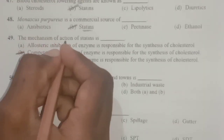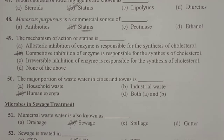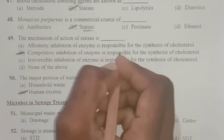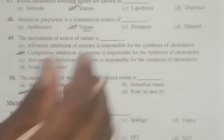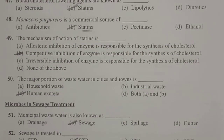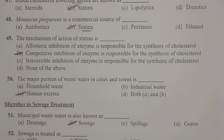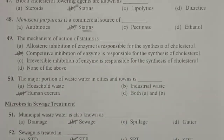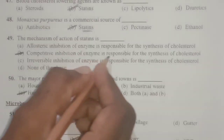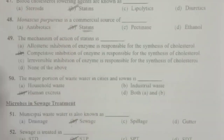Next: what is the mechanism of action of statins? The mechanism is competitive inhibition of the enzyme responsible for synthesis of cholesterol. Statins function as blood cholesterol-lowering agents by undergoing competitive inhibition of the enzymes responsible for cholesterol synthesis. By inhibiting these enzymes, they decrease blood cholesterol.